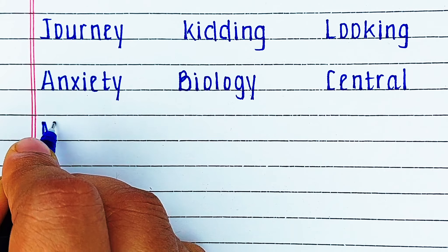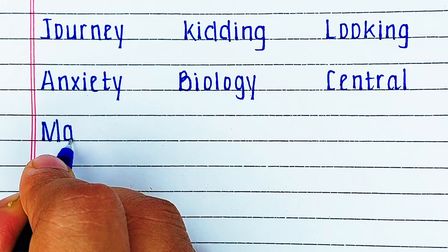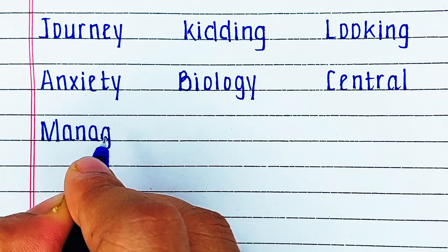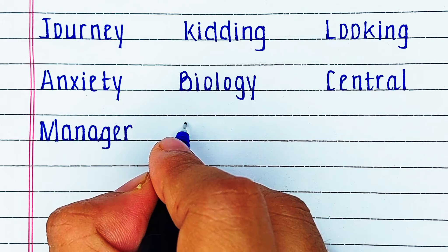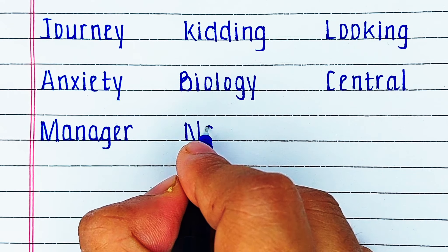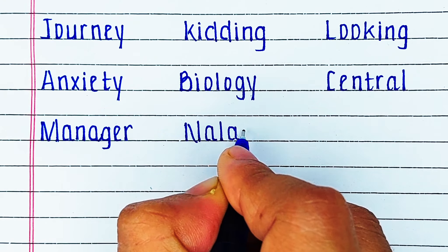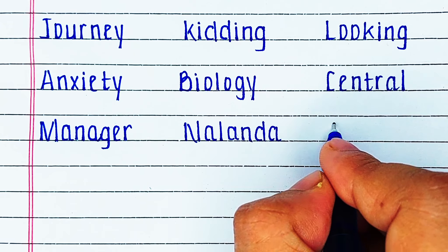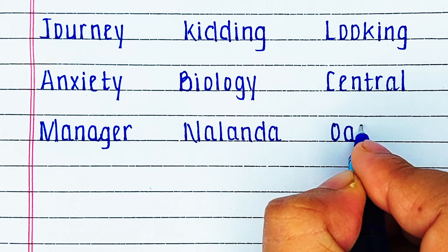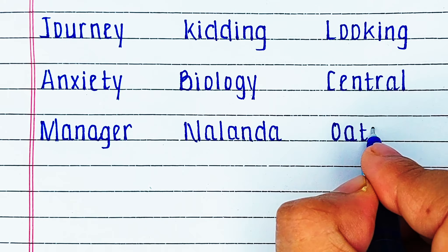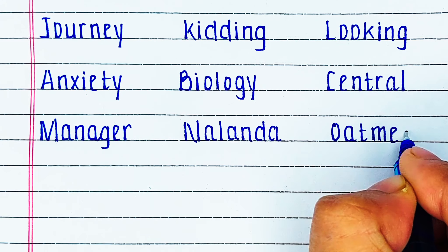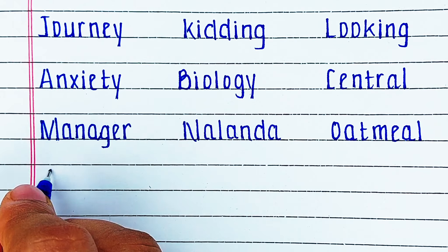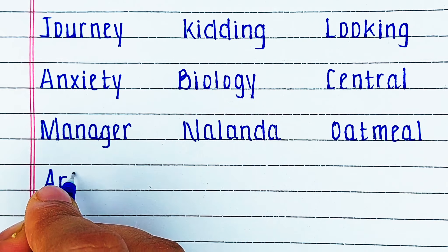Next word is M A N A G E R, manager. Next word is N A L A N D A, NALANDA. Next is Alphabet O. The word is O A T M E A L, oatmeal.